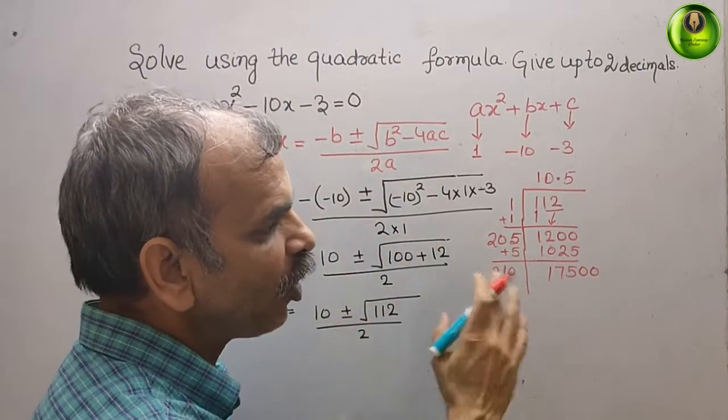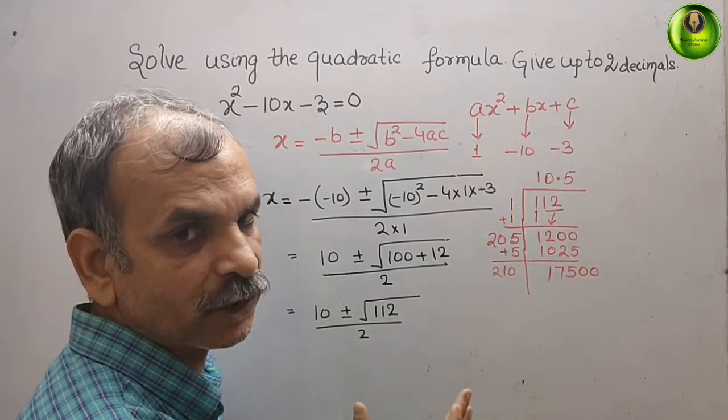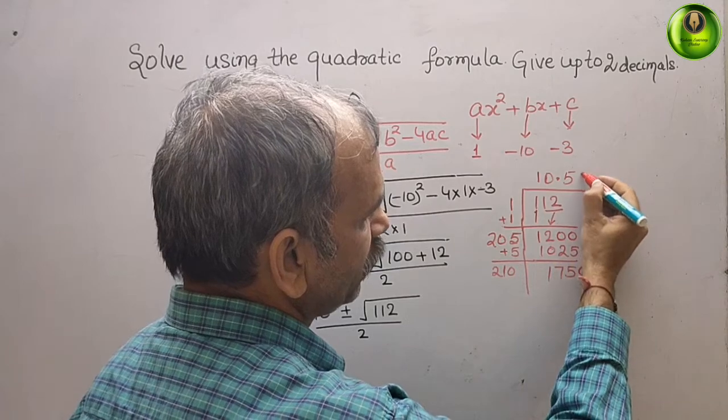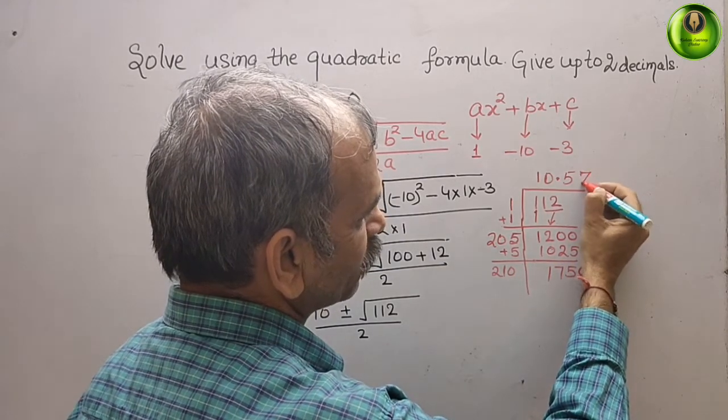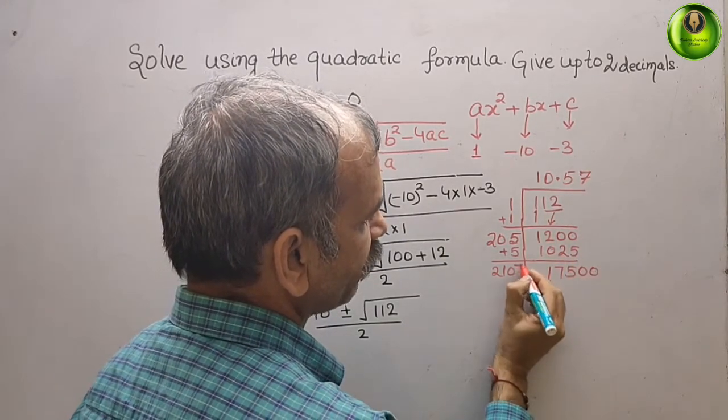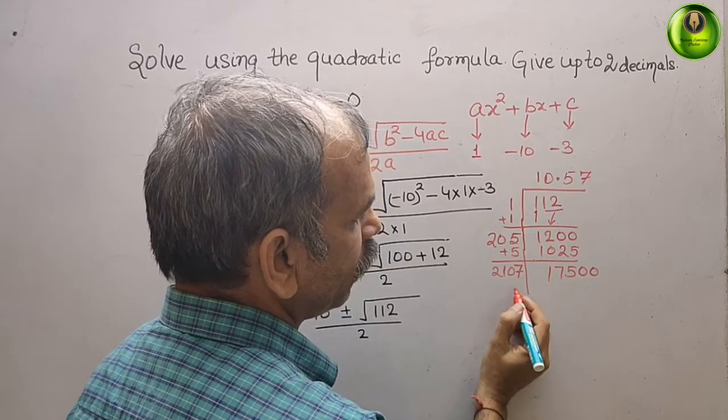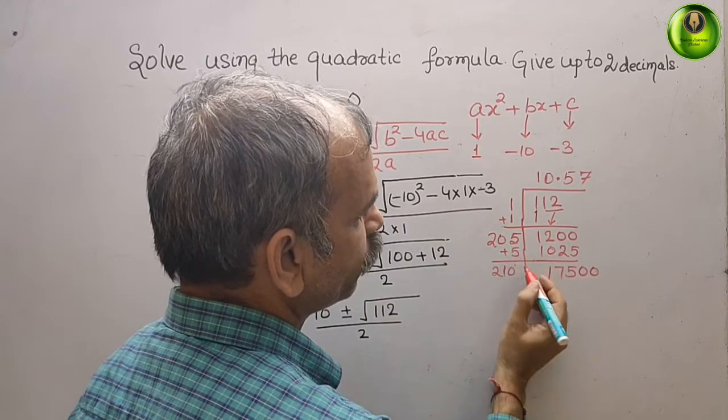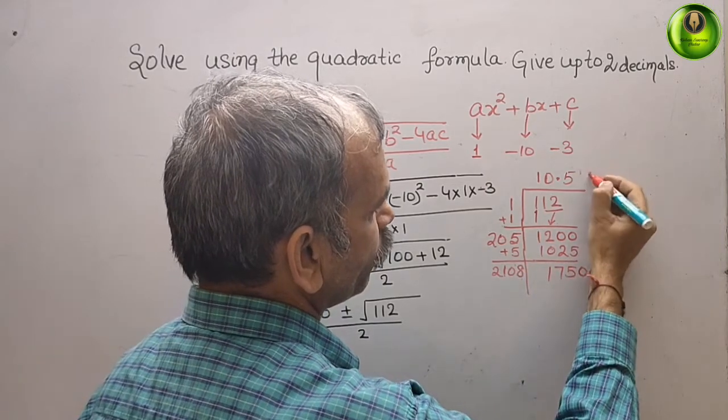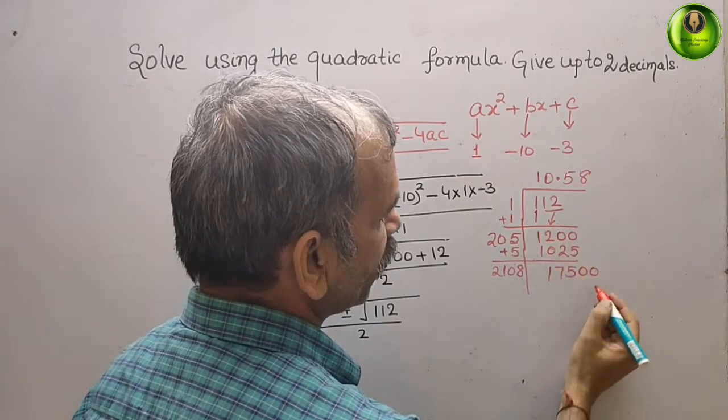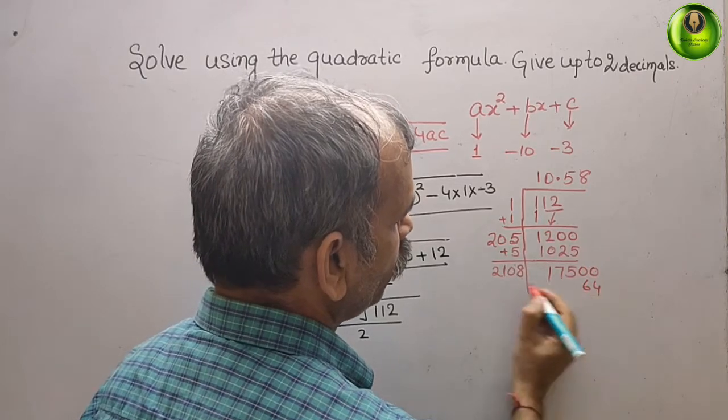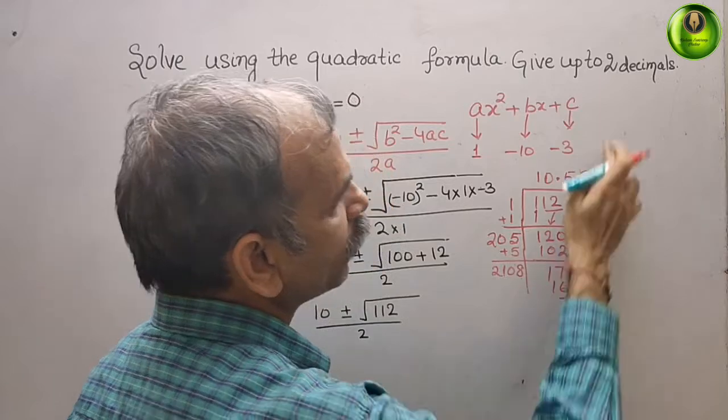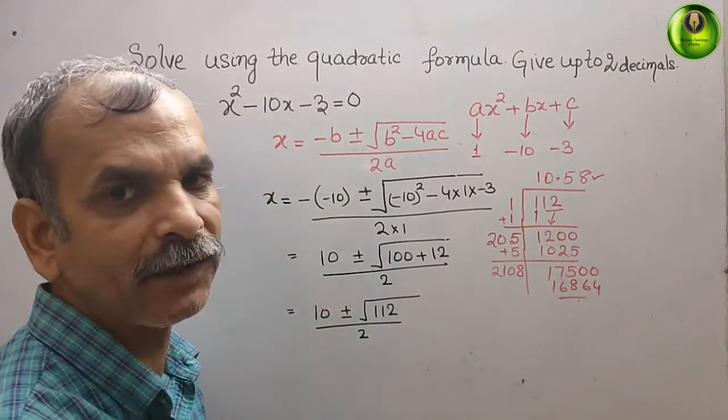So this is the long division method. Now what we have to put? Maybe 7 times, 7, or 8. Yes, we can put 8 also. So now it will be 64, 8 and 16. They told up to 2 decimals, that means 10.58.